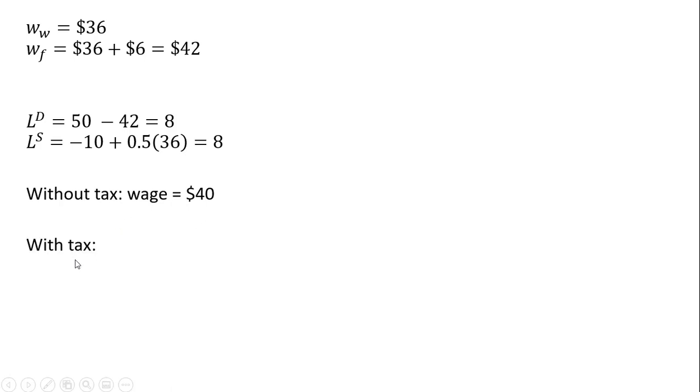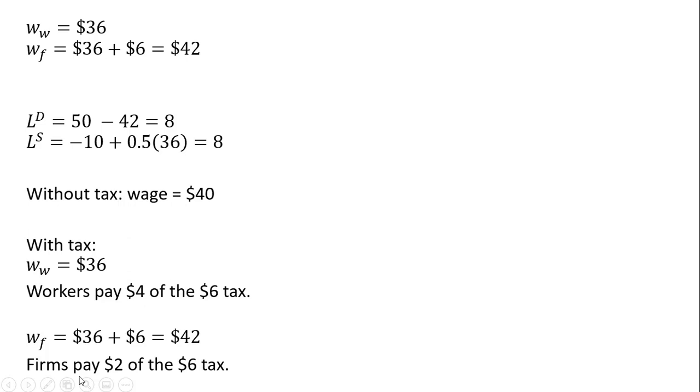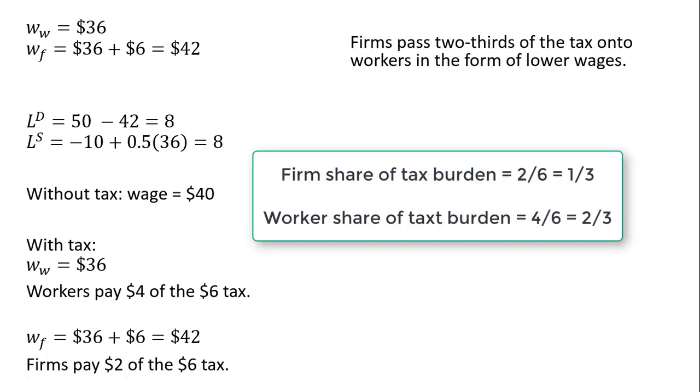Without the tax, the wage was $40. With the tax, workers get $36. So workers are actually paying $4 of this $6 tax. Firms are paying $42 and before the tax, firms were only paying $40 for labor. So firms are paying $2 of the $6 tax. Firms are able to pass two-thirds of the tax on to workers in the form of lower wages. Even though we see a firm writing a $6 check to the government, not all of that $6 is coming from the firm's pocket. $4 of it is coming from the worker's pocket in the form of lower wages.